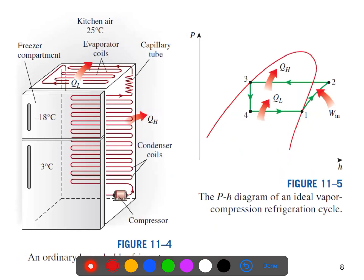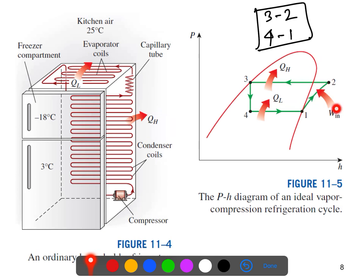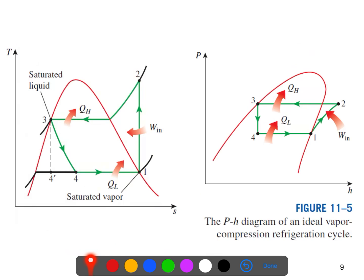Now we'll try to understand how the pressure changes. The constant pressure processes are 3-2 and 4-3. Process 1 to 2 is where the compressor works. For better comparison, consider this: on the T-S diagram versus the P-H diagram, at points one and two, it is an isentropic change, meaning entropy is equal.